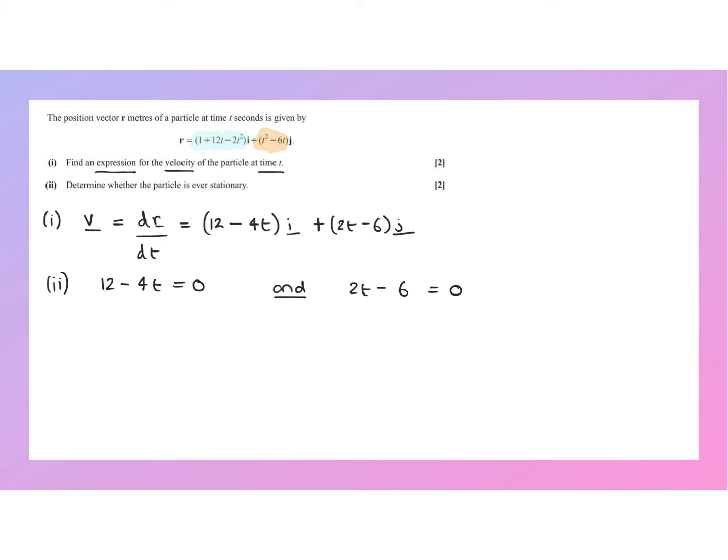So the first equation here, very simple, 4t equals 12, t equals 3. So at 3 seconds, the i component of the velocity must be equal to 0.